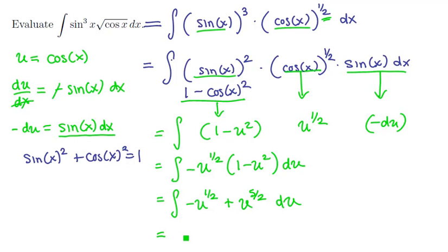And now we have power functions to integrate. So the negative comes along for the ride, we'll get u to the three-halves times two-thirds for the first term. Second one, we up the power to get seven-halves multiplied by two-sevenths. And there's our anti-derivative in u.